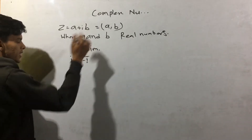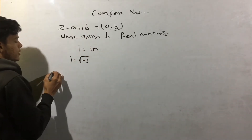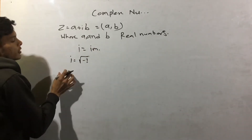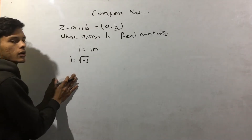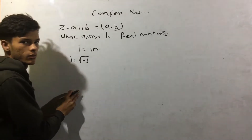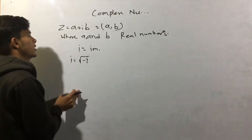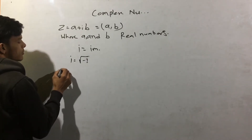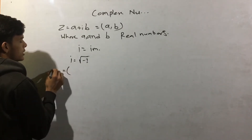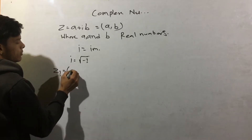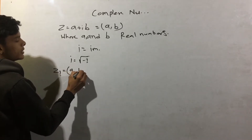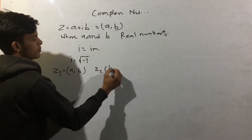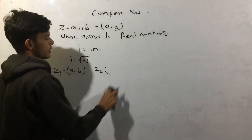Now we are going to look at addition, multiplication, and other operations on complex numbers. Let z1 be a complex number and z2 be equal to c plus id, where c and d are real numbers.